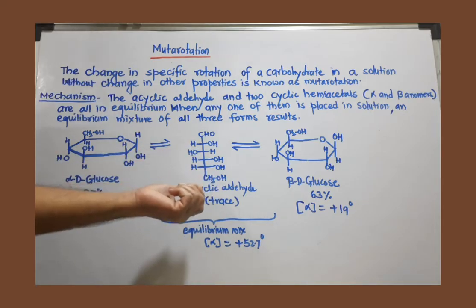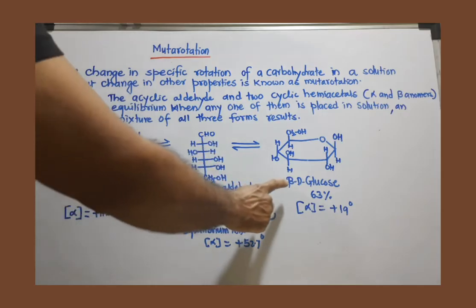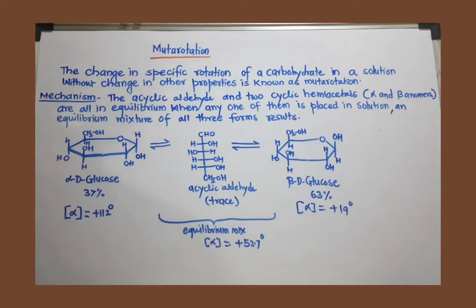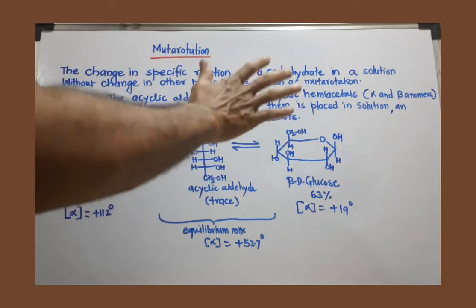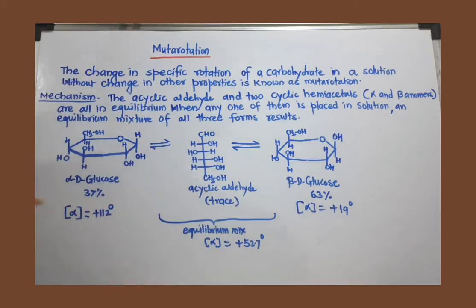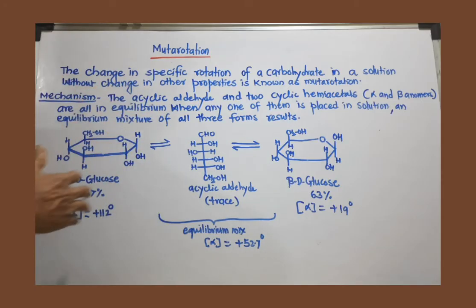If you have seen my previous video on chair conformation, I mentioned that beta-D-glucose is more stable because all bulkier groups are at equatorial positions, not at axial positions. Because of that, they get sufficient room and provide stability. So beta-D-glucose is more stable compared to alpha-D-glucose. We can explain this using its chair conformation. Instead of using this Haworth formula, you can use chair conformation for this mechanism.